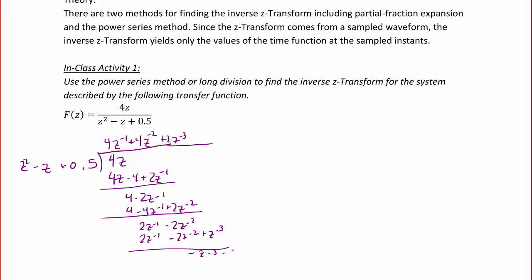For negative Z to the negative 3, the next term would be negative Z to the negative 5, and we're going to stop there and find the first four terms. So I can rewrite this as F of Z is equal to 4Z to the negative 1 plus 4Z to the negative 2 plus 2Z to the negative 3 plus Z to the negative 5, and this would go on forever, so plus dot dot dot.